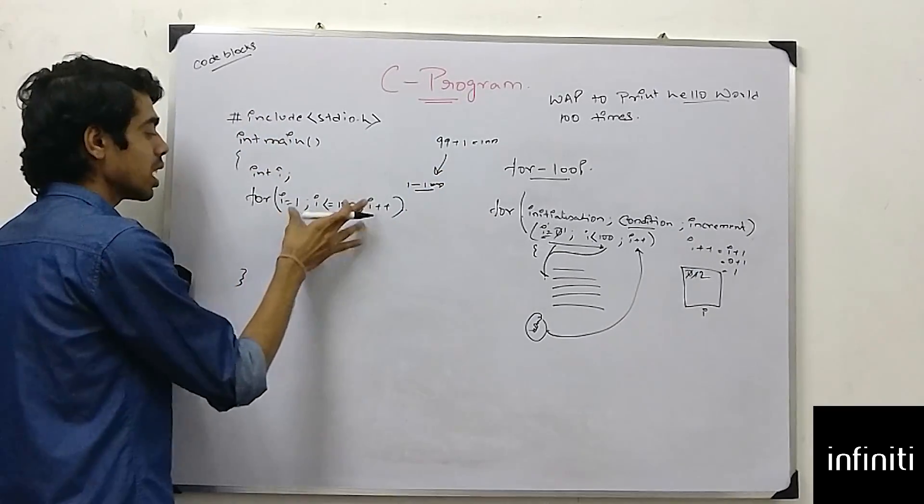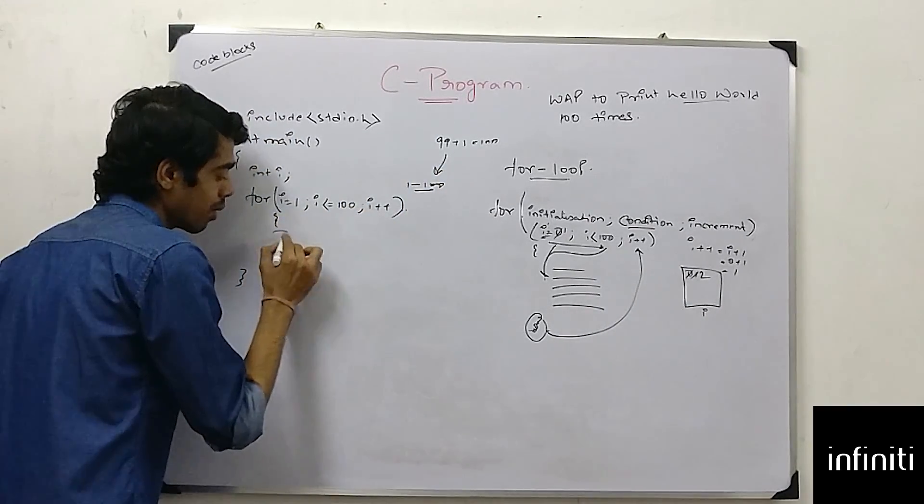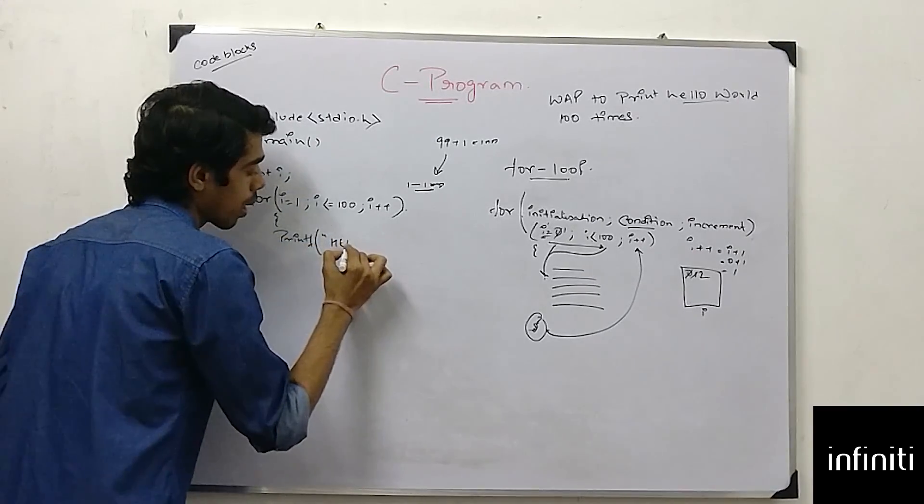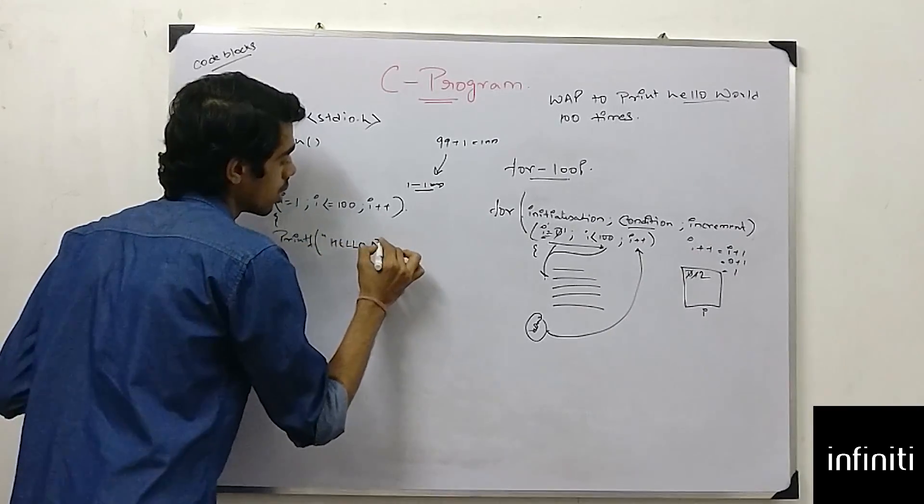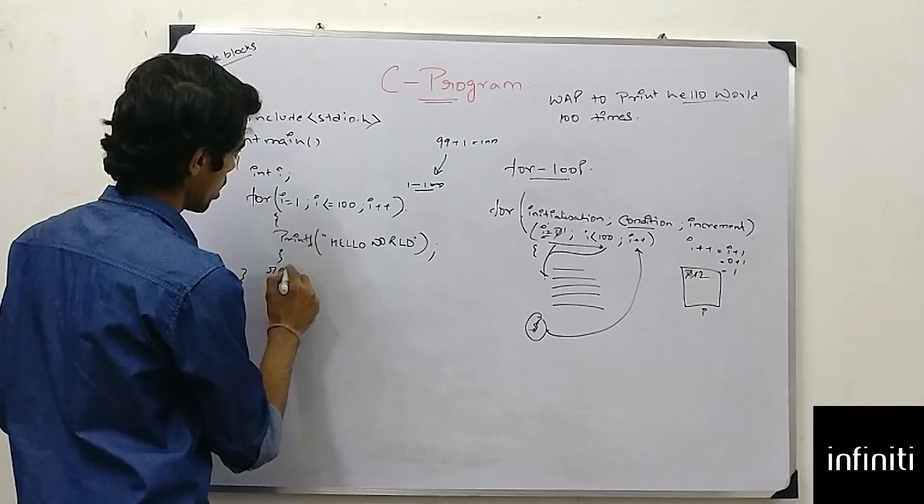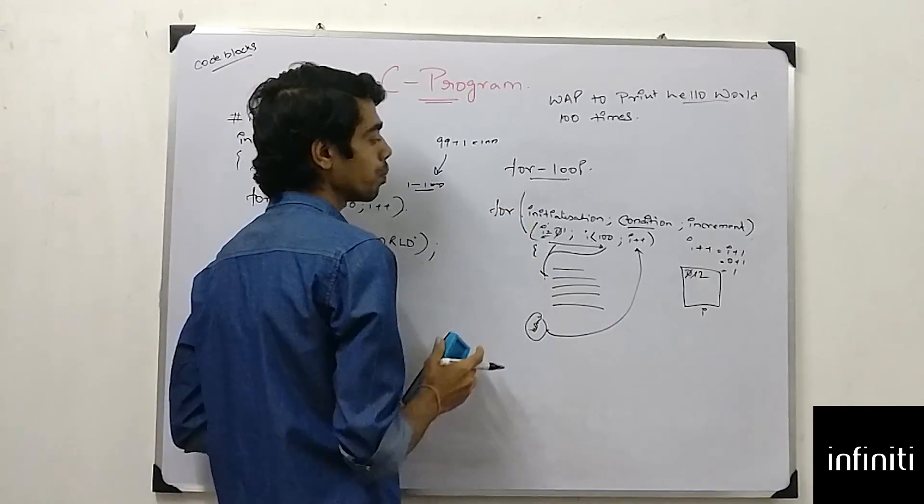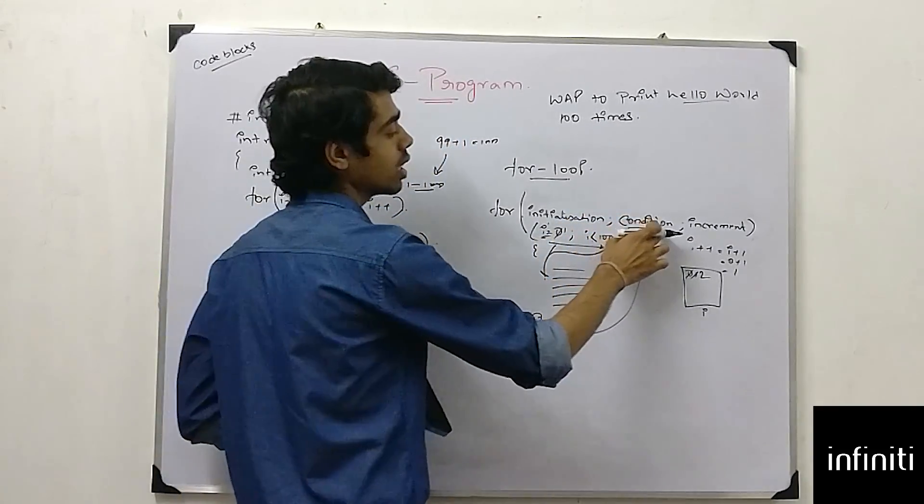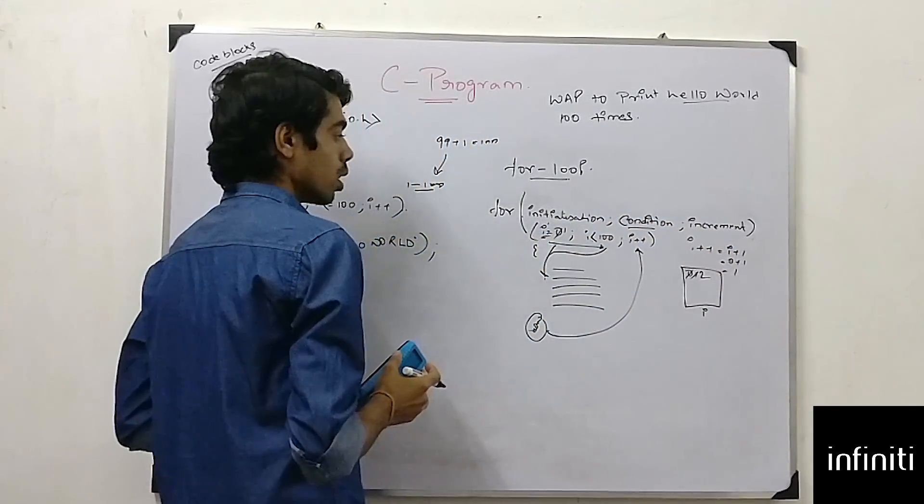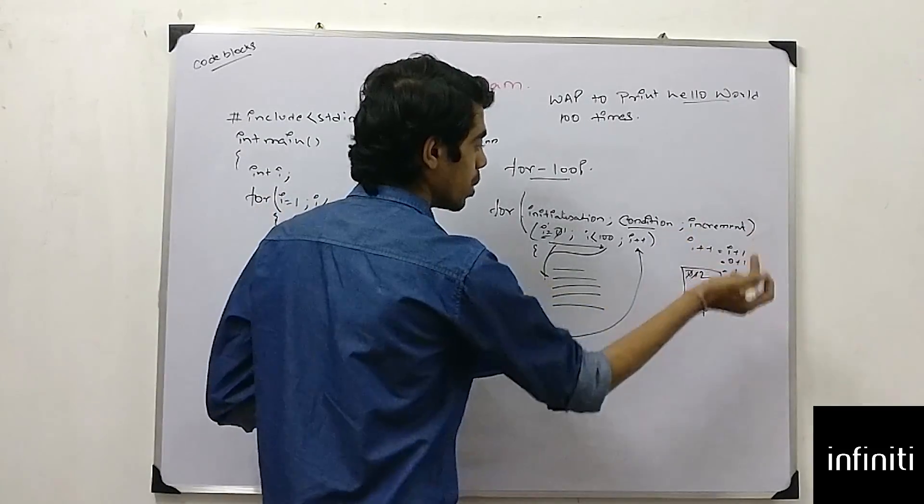So, after writing this statement, I will write printf, hello world, then return. This is my for loop. First I have done initialization, then the condition, then the increment. How does this increment behaves?